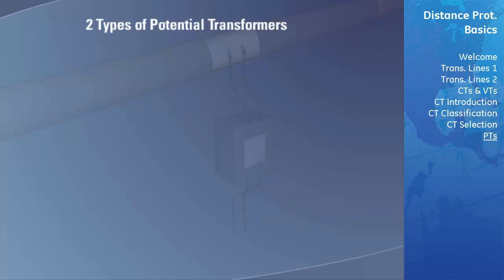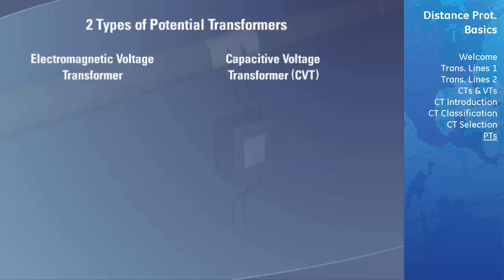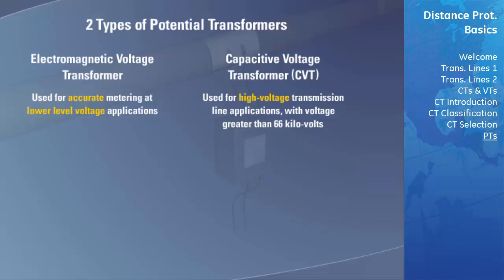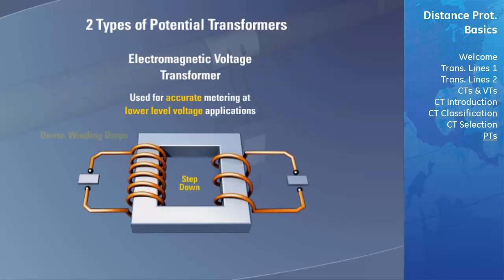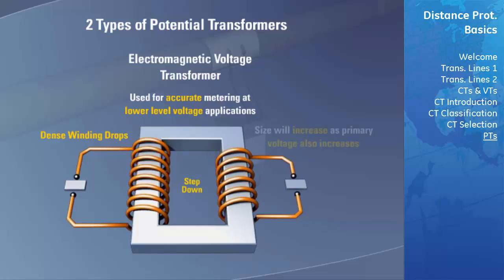There are two different types of potential transformers used today: the electromagnetic voltage transformer and the capacitive voltage transformer. Electromagnetic voltage transformers are usually used when accurate metering needs to be performed for lower voltage applications. Capacitive voltage transformers are commonly used in high voltage transmission line applications where the voltage is higher than 66 kilovolts. Electromagnetic voltage transformers have dense winding designs to accurately scale down the voltage and maintain a consistent ratio. Due to the small amount of voltage drop per winding, electromagnetic voltage transformers increase in size as the rated primary voltage increases, and their cost tends to increase at a disproportionate rate to the primary voltage rating.